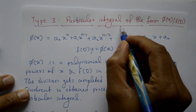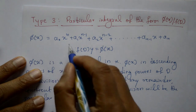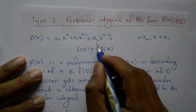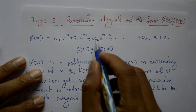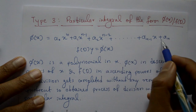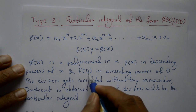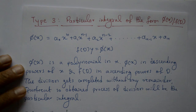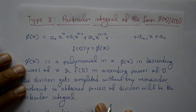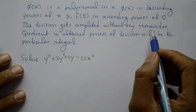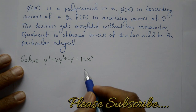Type 3: Particular integral of the form phi(x) / f(D). Here phi(x) is a polynomial: a₀xⁿ + a₁xⁿ⁻¹ + a₂xⁿ⁻² + ... + aₙ₋₁x + aₙ. In the function f(D)·y = phi(x), we write phi(x) in descending powers of x and f(D) in ascending powers of D. The division completes without any remainder, so in this type we use the division method.